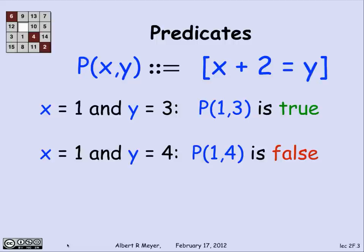If I tell you that x is 1 and y is 4, then since 1+2 is not equal to 4, P(1,4) is false. On the other hand, since P(1,4) is false, that makes not P(1,4) true. That's the easy part.